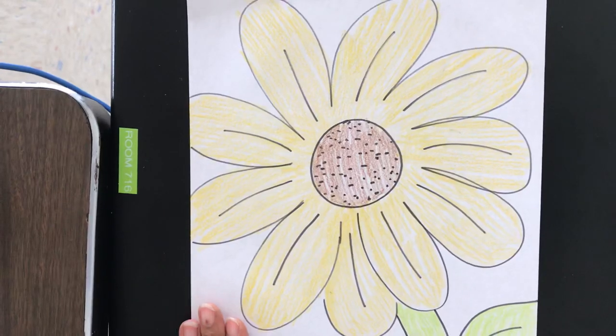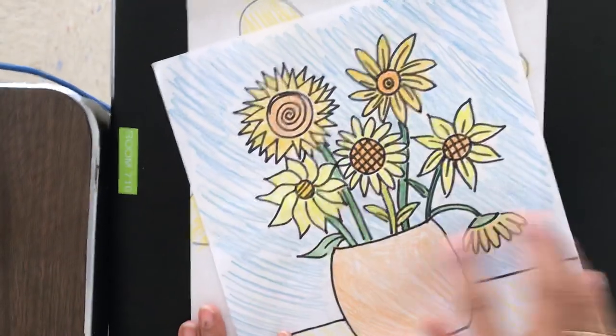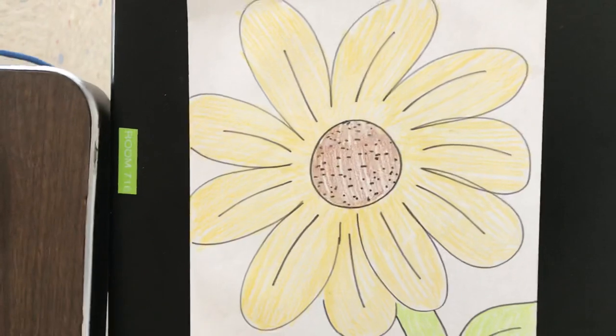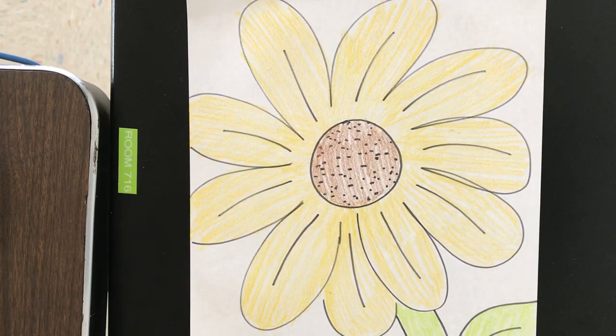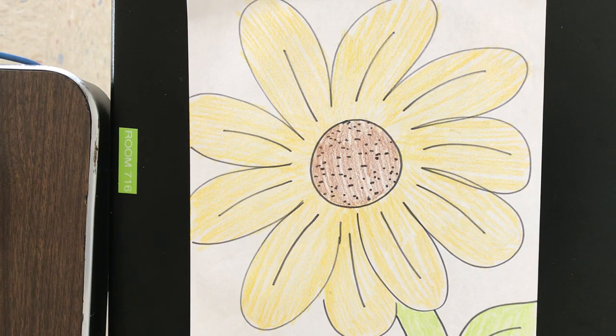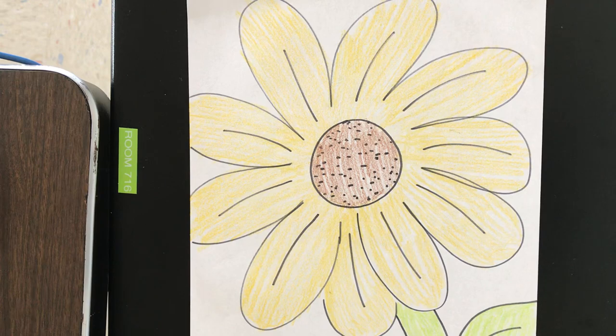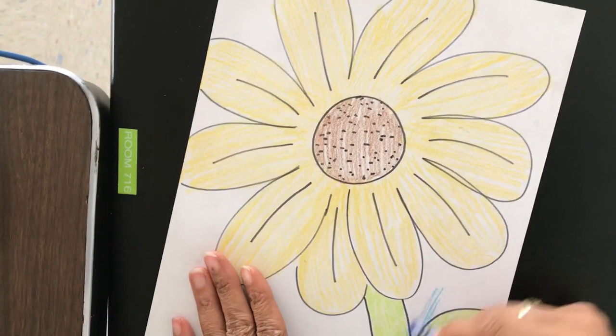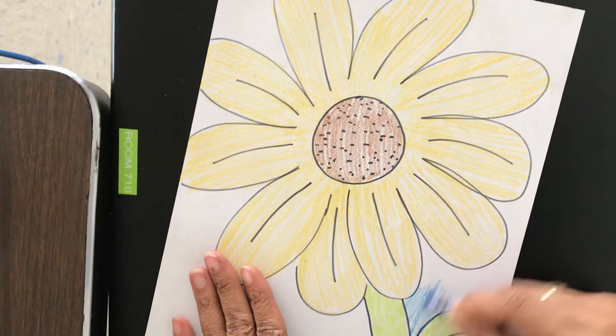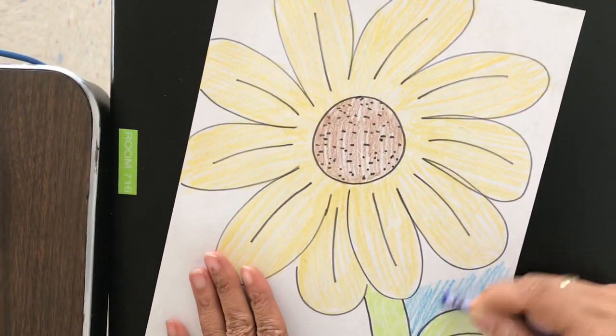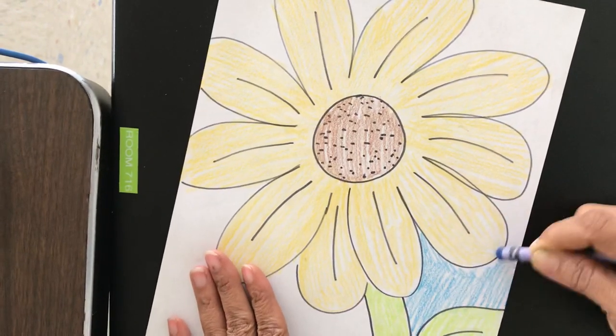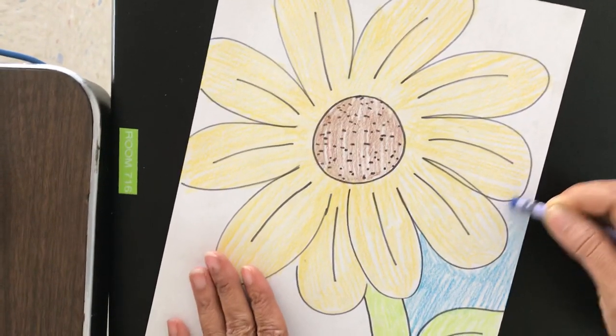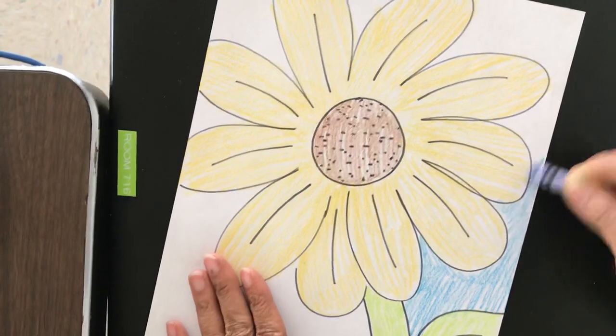So we're going to color that, too. You see how I colored the background on this one? So we're going to color the background on our flower. And I'm going to choose a nice, pretty color blue to color the background of my flower. So remember, our flower is in the foreground, but the blue is in the background, everybody.